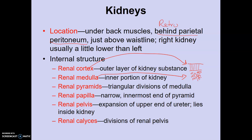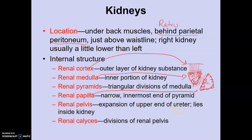The renal pyramids are triangular organizations of cells within the medulla — some of the cell groupings look like little triangles. The renal papilla are the narrowest regions of those triangles. A renal pyramid sits within the medulla, and renal columns separate the pyramids. The renal pelvis is a region associated with the ureters, lying deep inside the kidney. The renal calyces divide the renal pelvis.